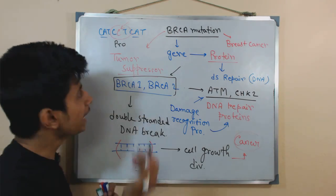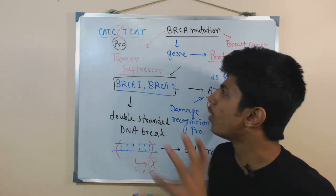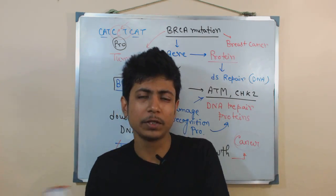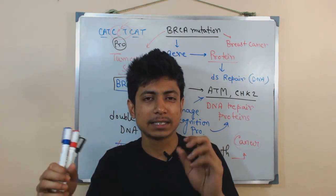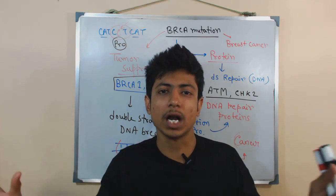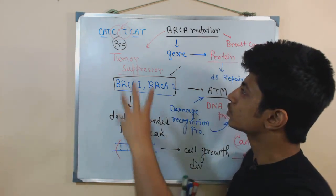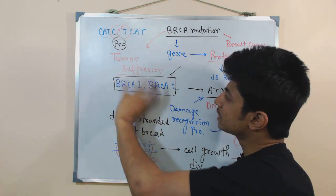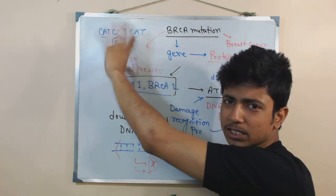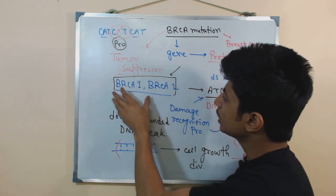So instead of histidine, the same position now has proline — and this changes the type of protein produced. This type of small change can have a large impact. In BRCA, such changes include substitutions (like A replaced by C), deletions, and additions — but it is majorly substitution. These changes alter the protein produced by the BRCA gene.